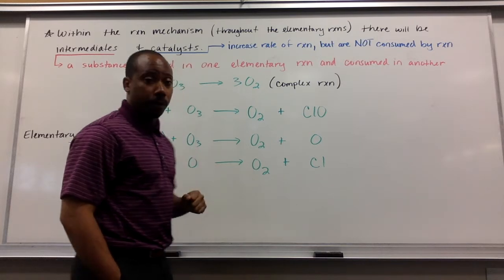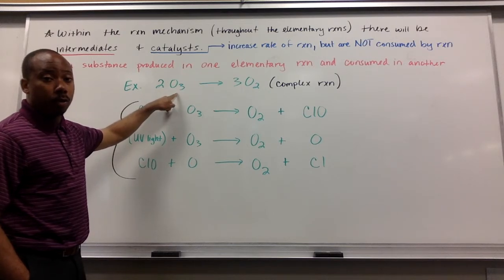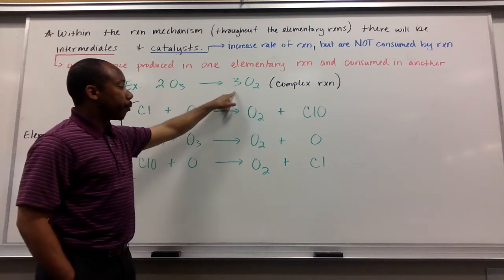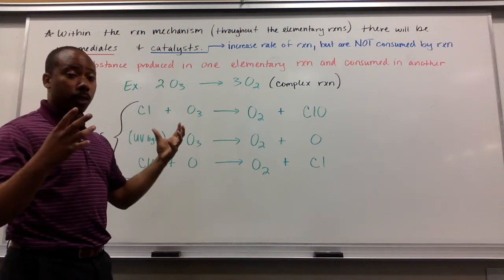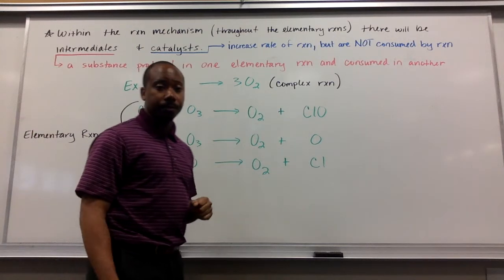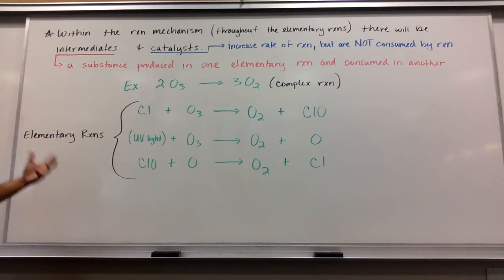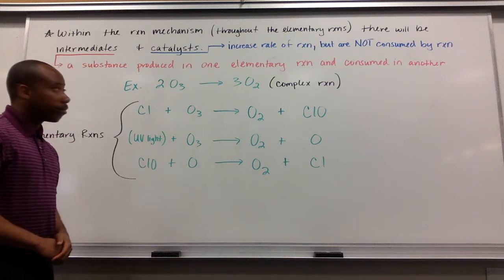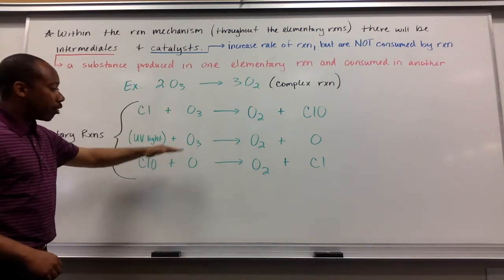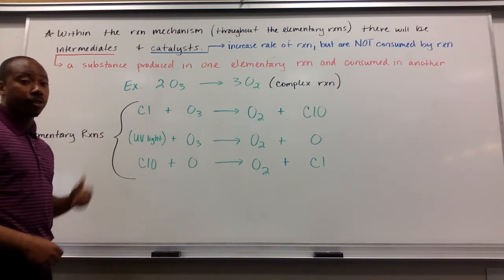Here's an example. We've seen this before in class. We have two moles of O3 going to three moles of O2. This is your overall balanced chemical equation. This is your complex reaction. Here are three elementary reactions. This is how this overall reaction actually happens stepwise. In these elementary reactions, our goal is to identify our catalysts and our intermediates.